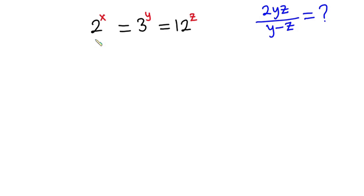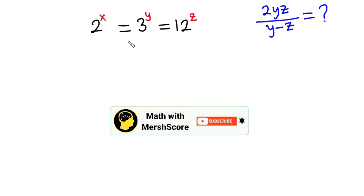Hello everyone. In this video we have this interesting problem: 2 to the power x is equal to 3 to the power y, and this is also equal to 12 to the power z, and we have to find the value of 2yz over y minus z. I'll be using two approaches to solve this problem, but before we begin, as always, pause the video and try first. If you're new here, consider subscribing and don't forget to like this video.